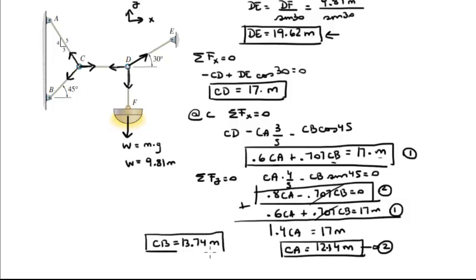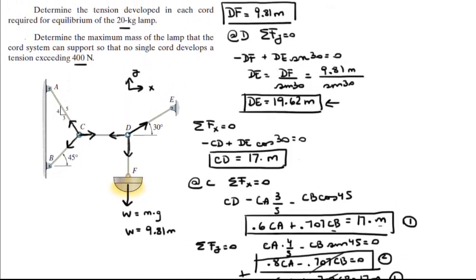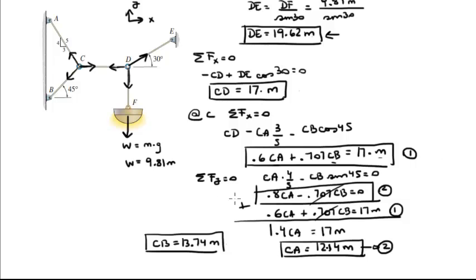Now we have the tension in all the cables in terms of the mass: CB, CA, CD, DE, and DF. With all tensions expressed as multiples of mass, we can solve both problems very easily.